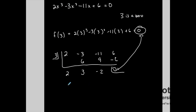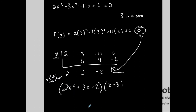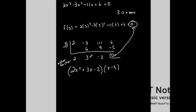So now this becomes 2x squared plus 3x minus 2. My function in factored form is 2x squared plus 3x minus 2, times x minus 3. I determined x minus 3 was one of my factors, and when I divided by that factor, I got my other factor. I'm breaking this polynomial down into simpler types of polynomials.